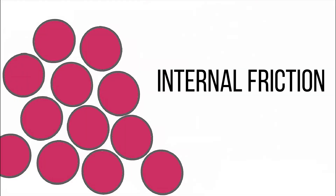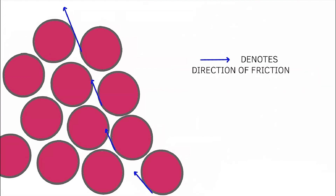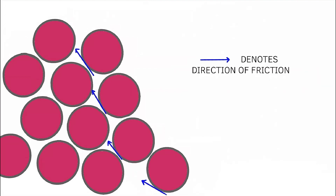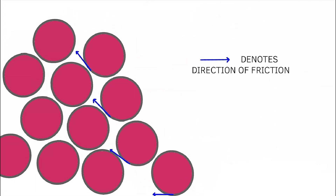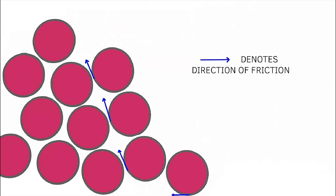The next type of friction is internal friction, which is the force that resists motion between the elements making up a solid material while it undergoes deformation.